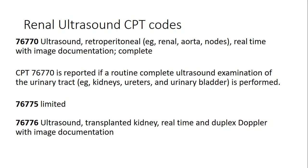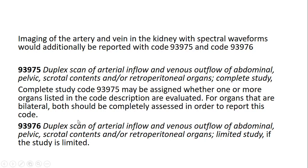Two more codes are majorly used for the arteries and veins of the kidney with spectral waveform: 93975 and 93976. The first is the complete exam and the second is limited — 93975 is the complete study and 93976 is the limited study. The complete study code 93975 may be assigned whether one or more organs listed in the code description are evaluated.